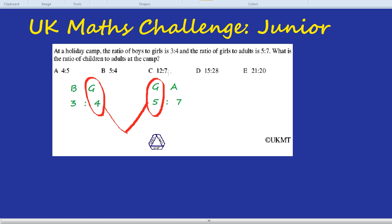And then we could just say well get the boys and girls together and look at the adults and there's our ratio. First we need to find a number which 4 goes into and which 5 goes into.